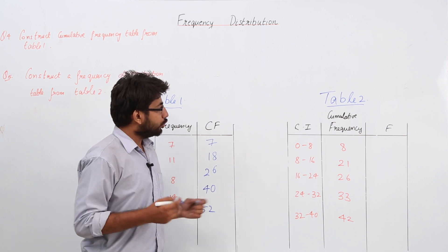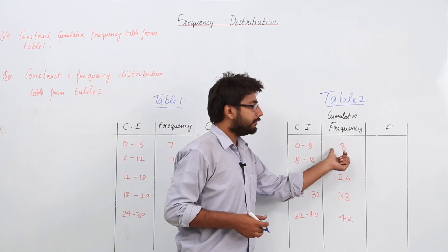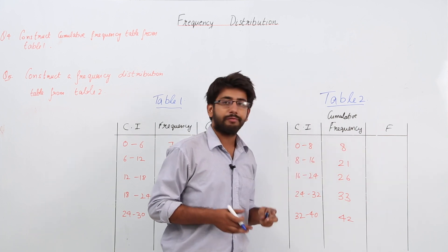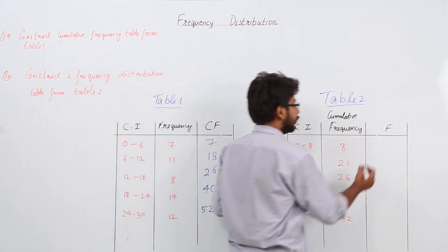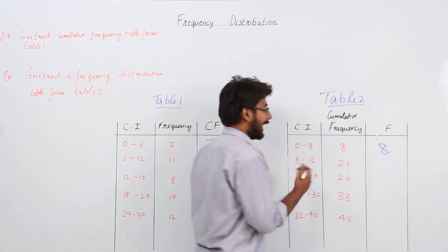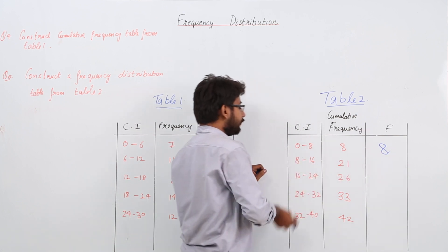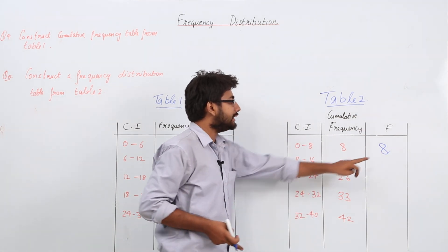You know that the first element of CF (cumulative frequency) and F (frequency) is always the same. So let us write this as it is. The frequency of class interval 0 to 8 is 8.